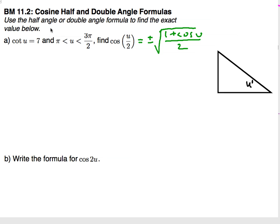We're going to use the half-angle or double-angle formulas to find the exact value below. Here, in this particular problem, I'm telling you that the cotangent of u is equal to 7, and we also know that u is in between pi and 3 pi over 2, which is in quadrant 3. And we have to find the cosine of u divided by 2, so that's the half-angle.